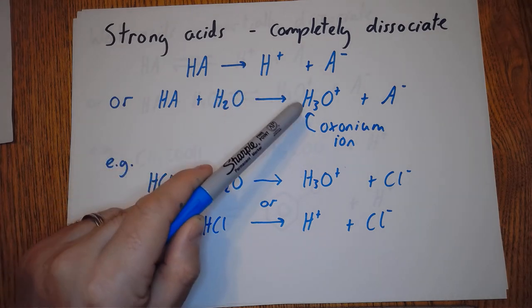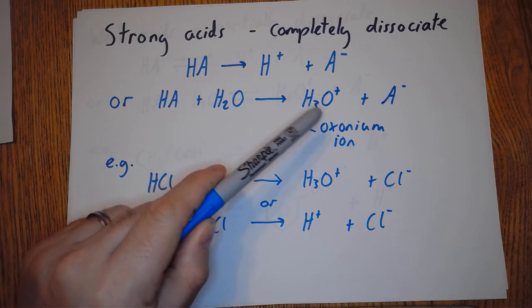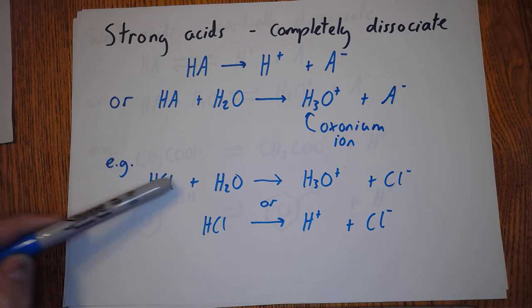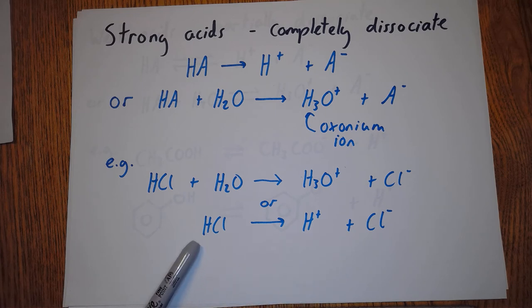H+ in solution in reality would look like that, but sometimes just to simplify things we just write H+. So here's hydrochloric acid - it can react with water to make the oxonium ion and the chloride ion, or we can just write it like this: HCl goes to H+ and Cl-. So strong acids completely dissociate, hence the one-way arrow.